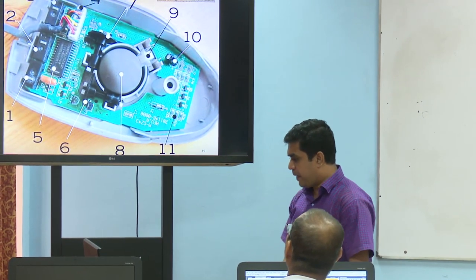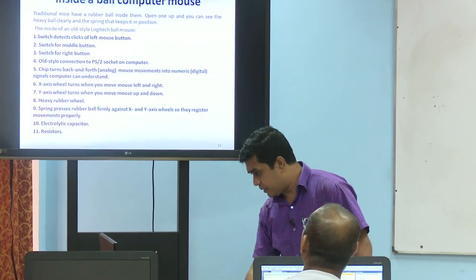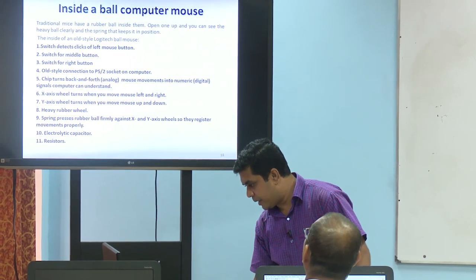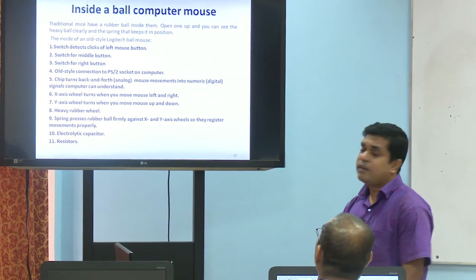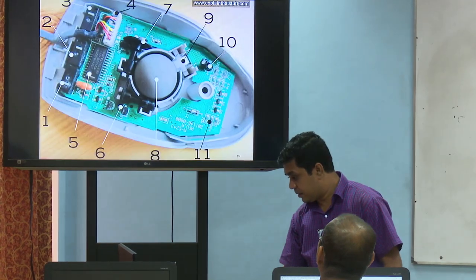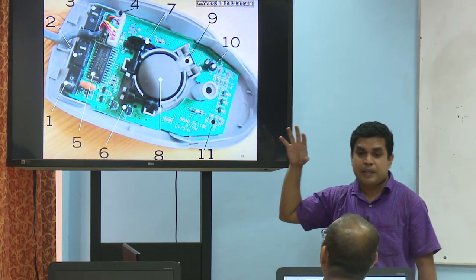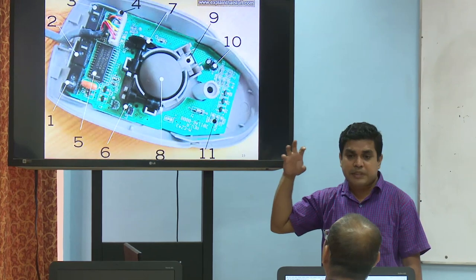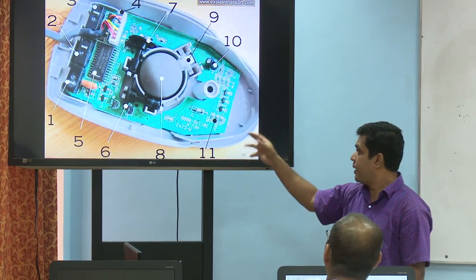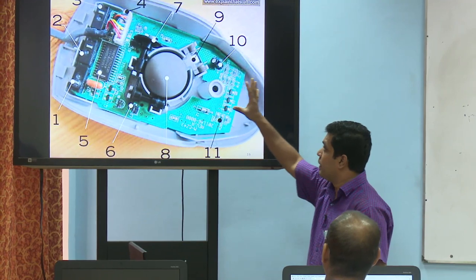Number 10 is the transistor. There is also a capacitor — an electrolytic capacitor. Number 11 is the resistor. These components are part of the circuit board.